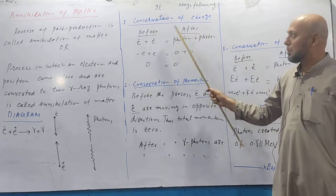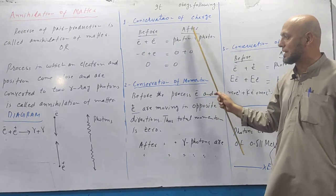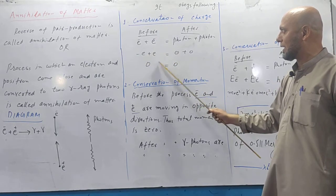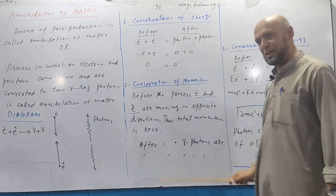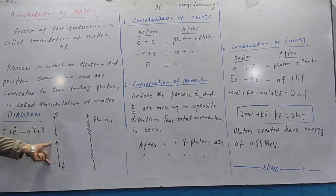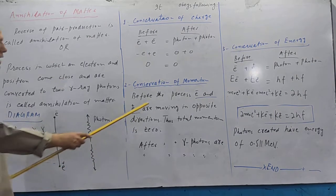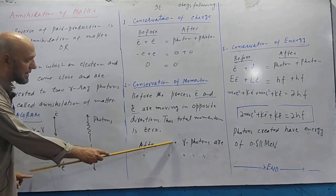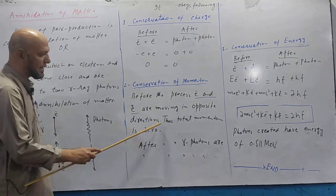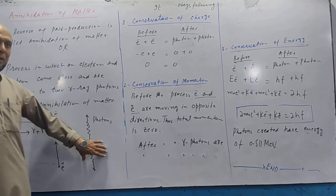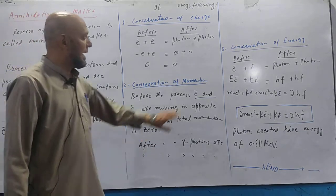Conservation of energy. Before process: electron plus positron. After process: photons. Electron's charge is minus e, proton's charge plus e - cancelled, zero. Both photons have zero charge. Result is zero. See momentum conservation. Before interaction, electron and positron's directions are opposite. After interaction, photons' directions are opposite. Before the process electron and positron are moving in opposite direction, thus total momentum is zero. After the process gamma ray photons are moving in opposite direction, thus total momentum is zero. Before process total momentum zero, after process also total momentum zero.